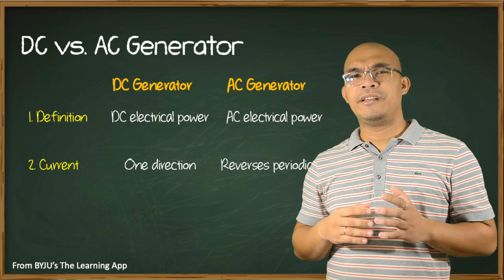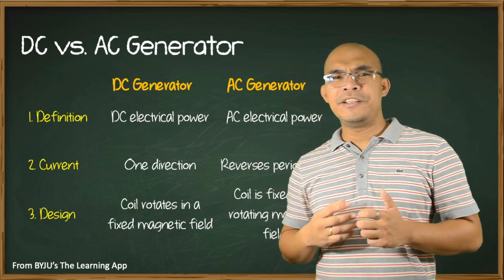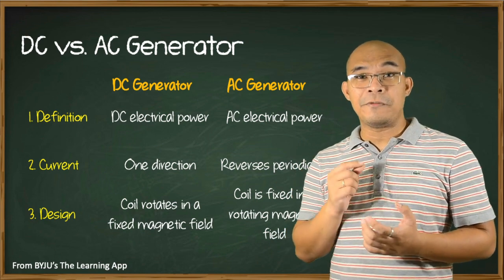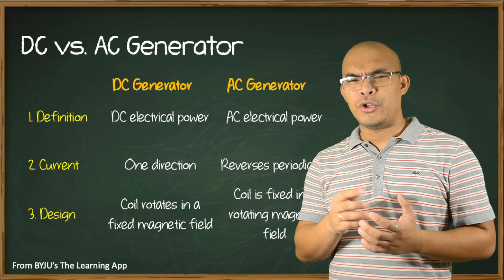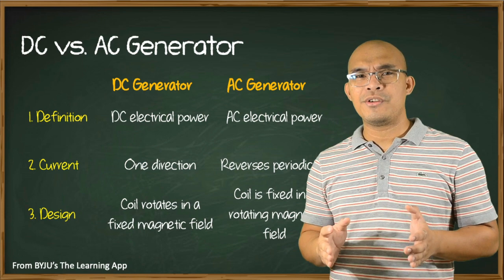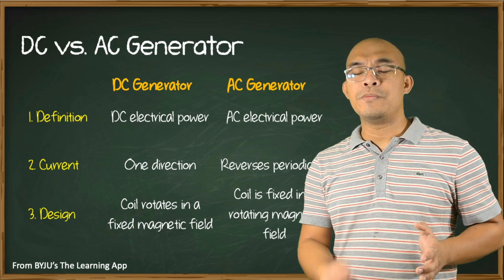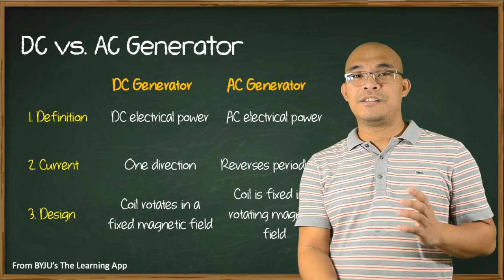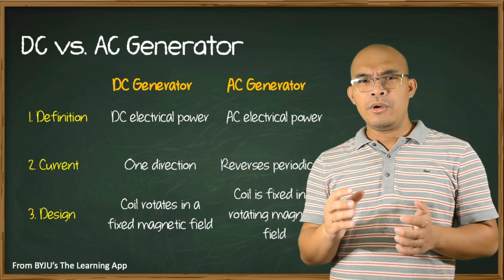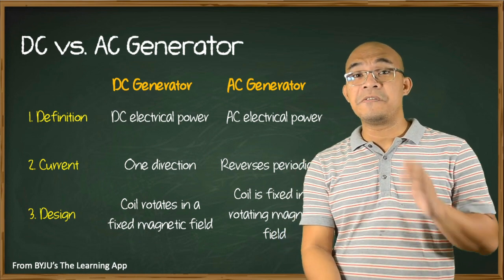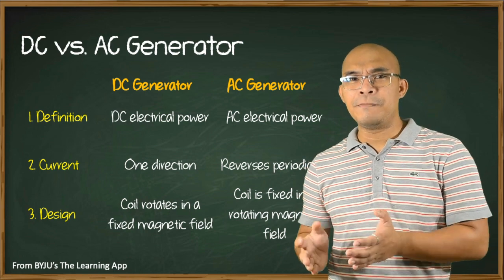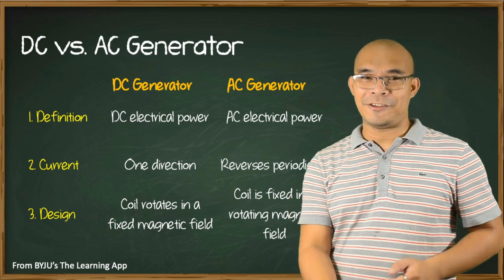When considering the basic design, in a DC generator the coil through which the current flows rotates in a fixed field. The overall design is very simple but its construction is complex due to commutators and slip rings. In an AC generator, the coil through which the current flows is fixed while the magnet moves. The construction is simple and costs are less.